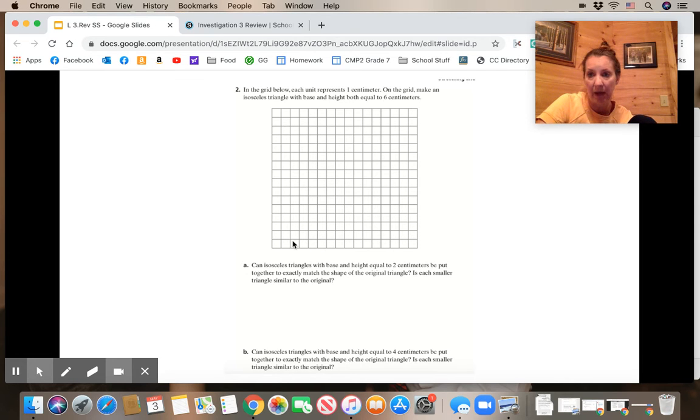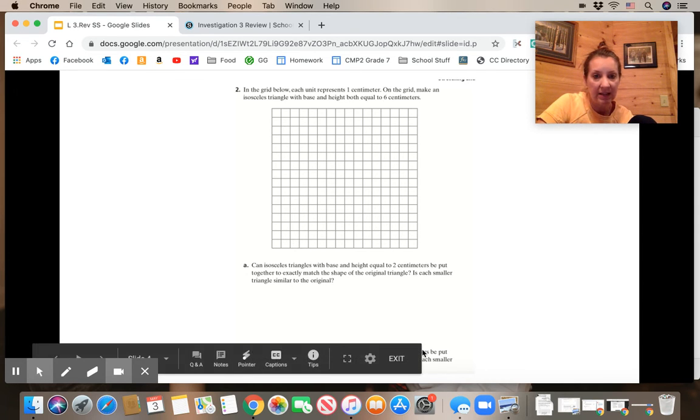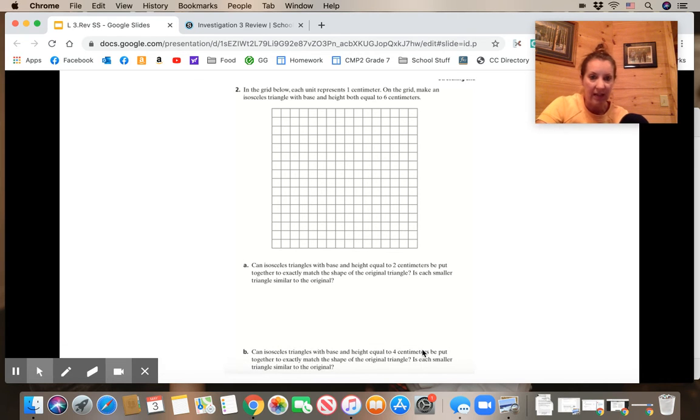Can isosceles triangles with base and height equal to 2 centimeters be put together exactly to exactly match the shape of your original? Is each smaller triangle similar to the original?